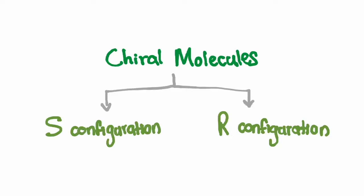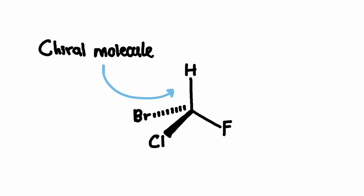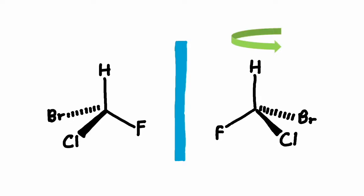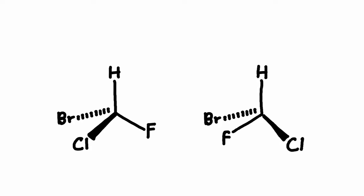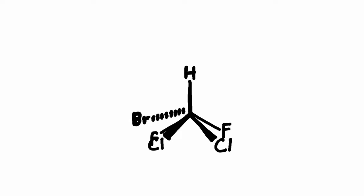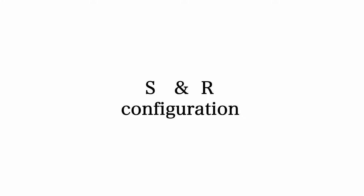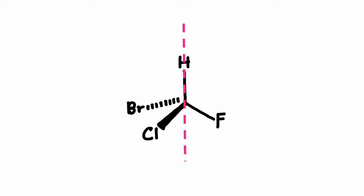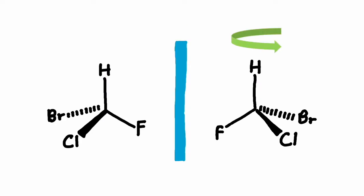S and R configurations are used to classify chiral molecules. Chiral molecules are molecules that cannot be superimposed onto their mirror images. The terms S and R configurations are used to describe the absolute configuration of the chiral centers. To understand S and R configurations, it's essential to grasp the concept of chirality. A chiral molecule lacks an internal plane of symmetry, meaning it cannot be superimposed onto its mirror image.